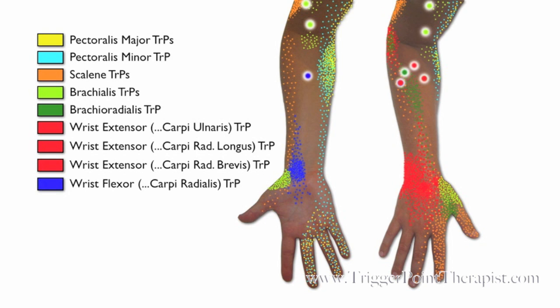Now in blue, we'll take a look at the wrist flexors, starting with the flexor carpi radialis trigger point. This one refers pain to the anterior aspect of the wrist on the thumb side. And next we have the flexor carpi ulnaris trigger point, again referring to the anterior aspect of the wrist, this one on the pinky side.